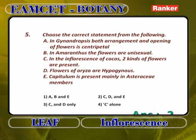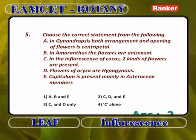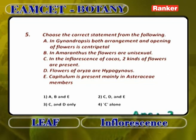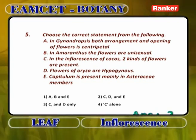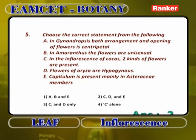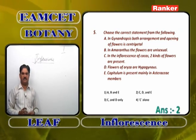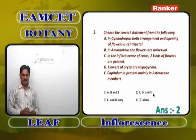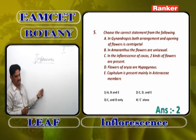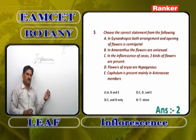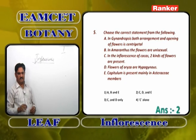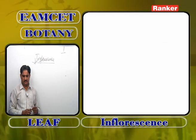Choose the correct statements. In gynandropsis, both the arrangement and opening of flowers is centripetal — this is wrong; only the opening is centripetal, while the arrangement is acropetal. In amaranthus, flowers are unisexual — this is wrong; in amaranthus, the inflorescence is a simple spike with bisexual flowers. The correct statements are C, D, and E: in cocos, two kinds of flowers (male and female) are present; flowers of oryza are hypogynous; capitulum is present mainly in Asteraceae members.